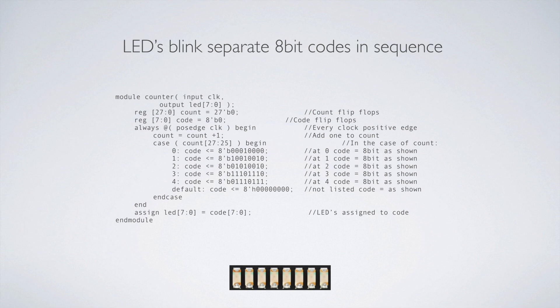The next thing that we do is make the LEDs blink separate eight-bit codes in sequence. We had this always-at block — we can make it blink at a certain time and it was all synchronous. Now that we have it synchronous, we can tie it down and start flashing different patterns at different times, which is preparing us to flash different patterns to the memory — to be able to load these codes into the memory of the LCD and it picks it up from there.